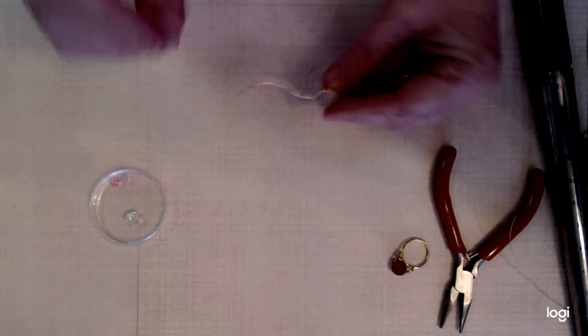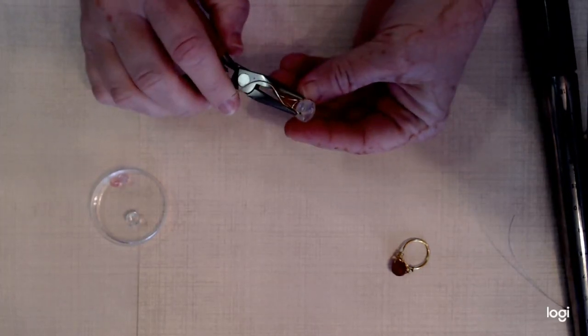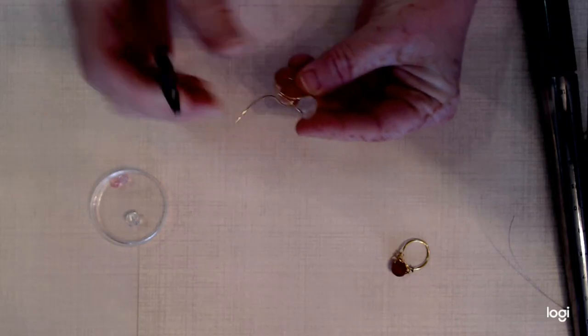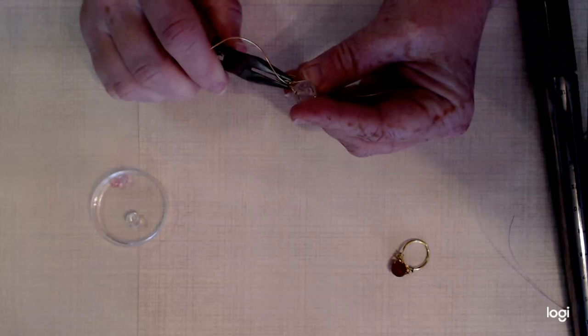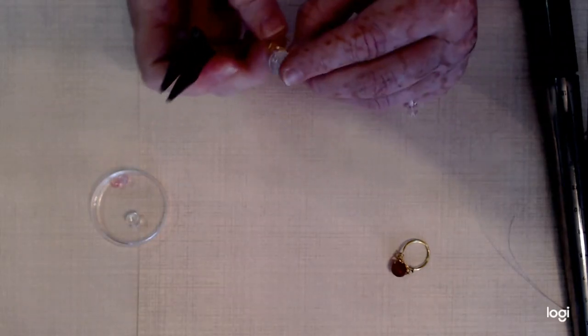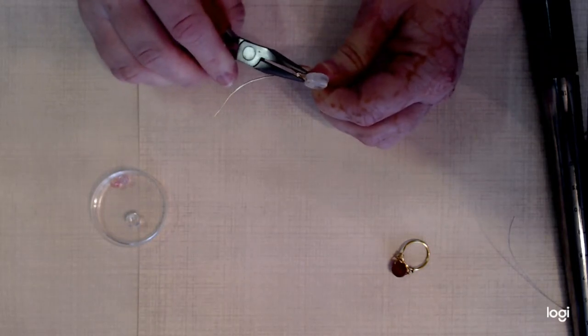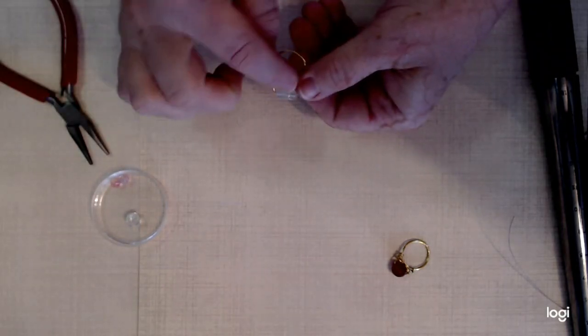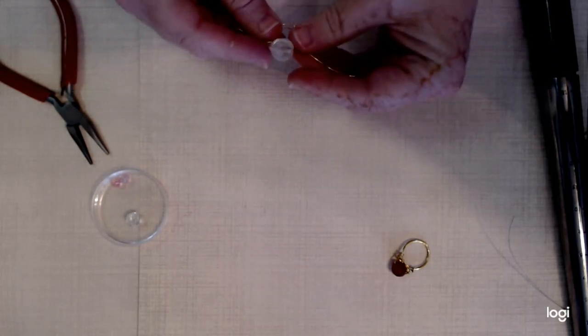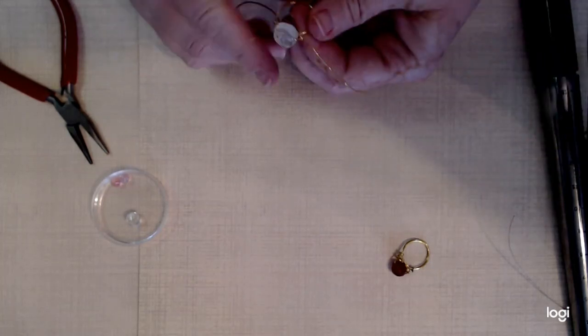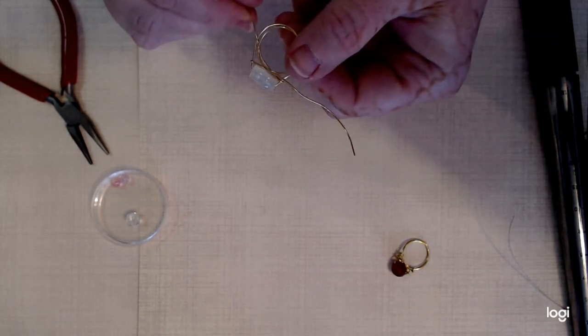Now I like to take the needle nose pliers and flatten out this part right here. I like to flatten that so it's nice and flat. Flip it over and flatten the other side. And these wires should go under the bead, not beside it, under it. That should give you a nice flat base for the bead to rest on.